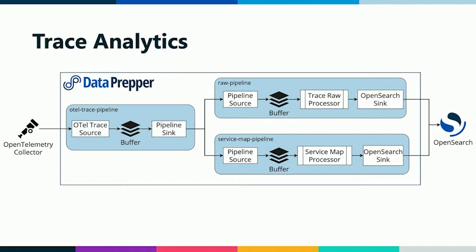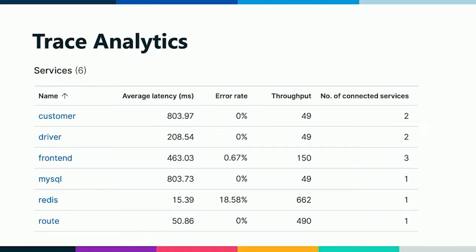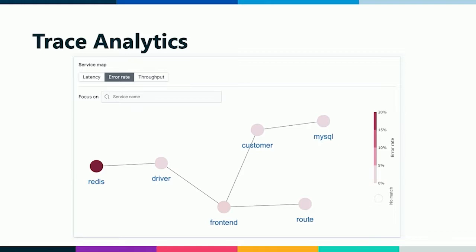Below it we have a service map processor. As we're getting all these spans and traces, we can find out what systems or applications are talking to each other, and this lets us build a service map you can see in OpenSearch Dashboards. This is a screenshot from the OpenSearch Dashboards UI. You can see the services — we derive this in Data Prepper from all the span data flowing through. We can get useful information like latency and error rate for different systems. In this zoomed-in view, we're highlighting the error rate, and you can see the red node — that's a Redis cluster showing an abnormally high error rate.